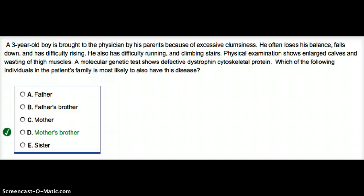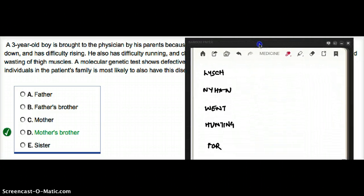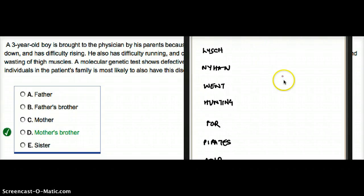But the way the exam gets us with these kind of questions is that we sometimes forget what is an X-linked disease. So how do you remember your X-linked diseases? This is how I remember. I remember by using the mnemonic: Lesch-Nyhan went hunting for pirates and gold cookies.